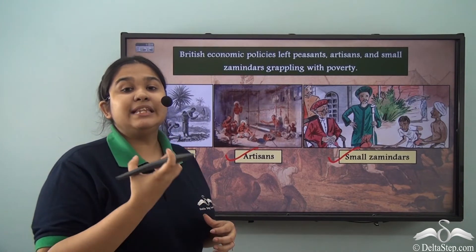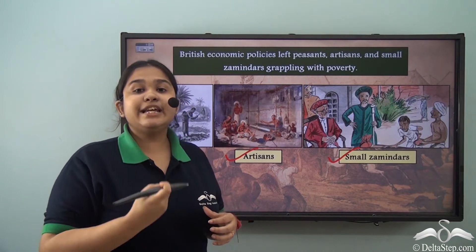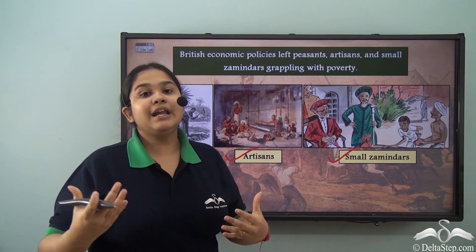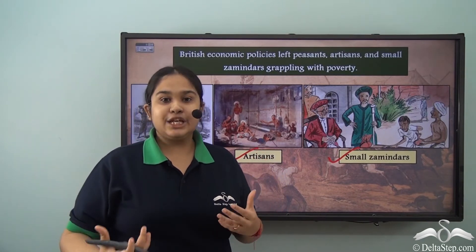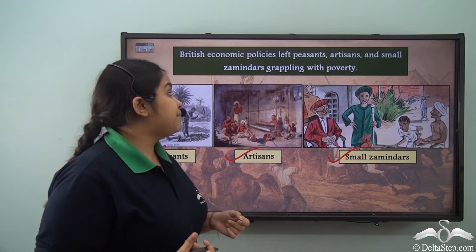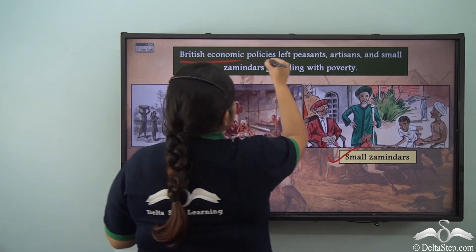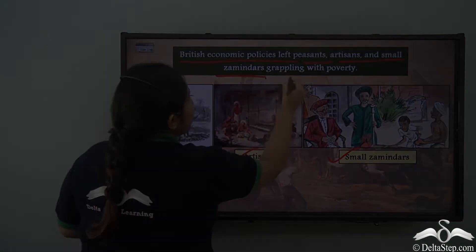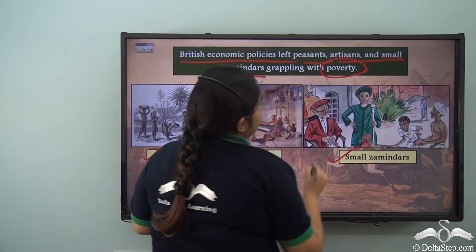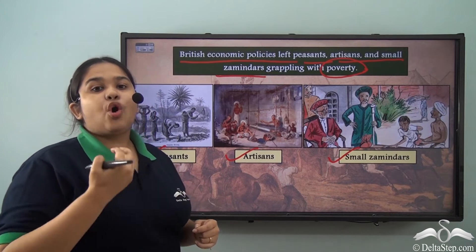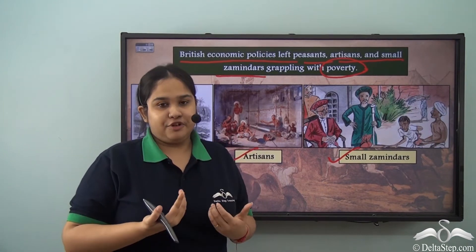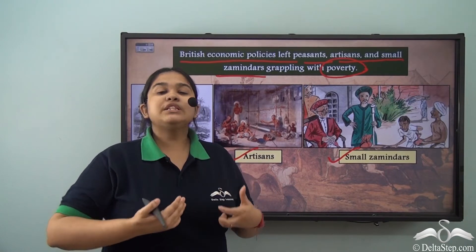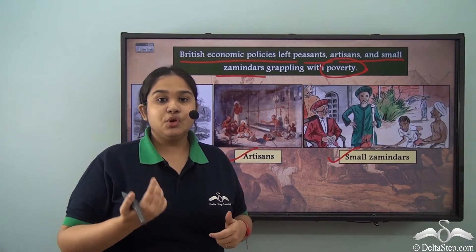They had very little income and couldn't even manage to gain a livelihood as de-industrialization was being processed by the British. The British economic policies left the peasants, artisans, and small zamindars grappling with poverty. The picture of Indian handicrafts and Indian home-bound goods was becoming poverty-stricken slowly and steadily.